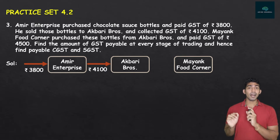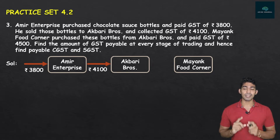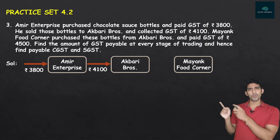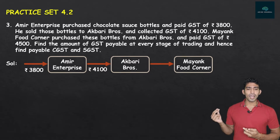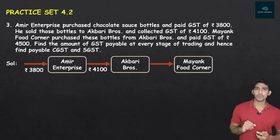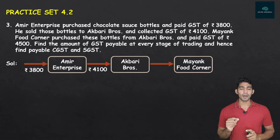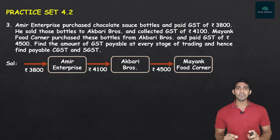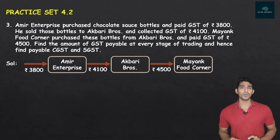After that, Akbari Brothers did not keep the chocolate sauce bottles. He sold them to Mayank Food Corner — so the arrow points towards Mayank Food Corner. The GST transaction at that time was for Rs. 4,500. You can see that making a simple flow chart makes many questions very easy.